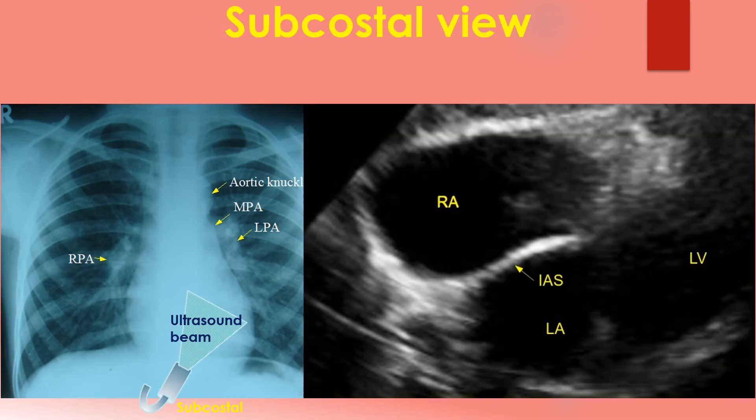The subcostal view is obtained from below the xiphoid sternum in the epigastrium. Transducer rotation is needed to get subcostal 4-chamber and short axis views. The interatrial septum is best imaged in this view. Assessment of the inferior vena cava for checking hydration status is also possible from this view. The subcostal view is a favourite view of paediatric echocardiographers.